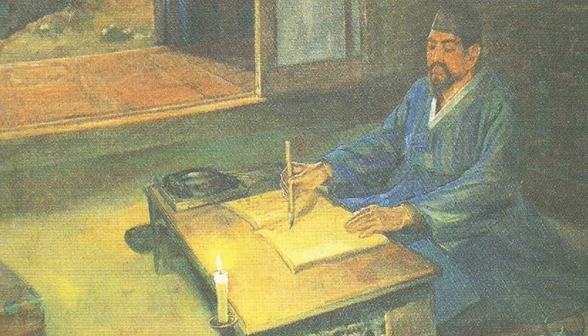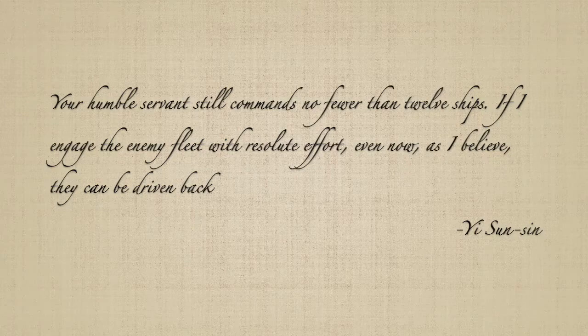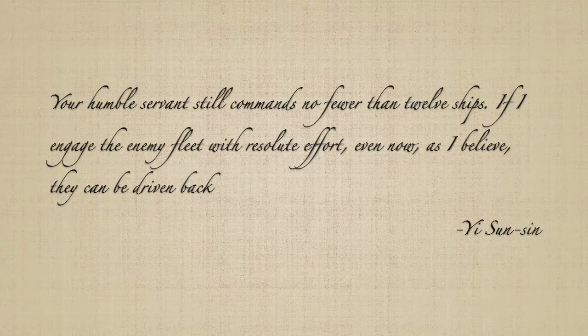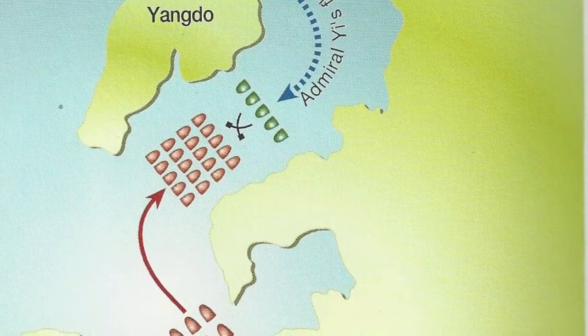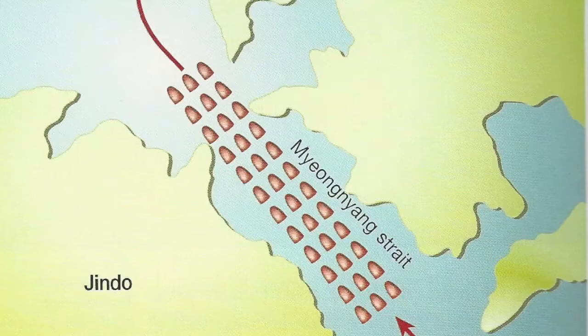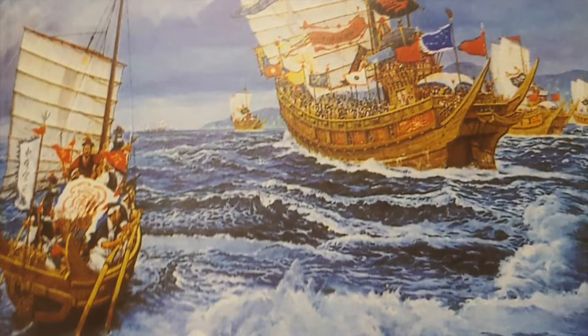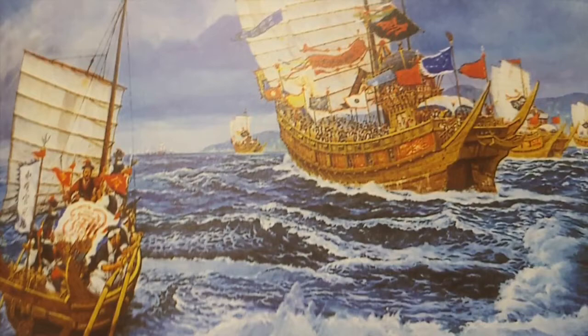The Korean navy once again called on Yi. He took up the challenge, writing to the Korean court: 'His humble servant still commands no fewer than 12 ships. If I engage the enemy fleet with resolute effort, even now, as I believe, they can be driven back.' He took a stand against the Japanese fleet at Myeongnyang Strait. The narrow waterway was easily maneuvered by Yi's small force, but the massive Japanese fleet was bottlenecked, so Yi's force could face it in manageable numbers. The strong, changing currents added to the chaos for the Japanese, so that they could not effectively maneuver their ships and were unable to escape the hailstorm of Korean arrows and cannonballs. Yi's 12 ships succeeded against more than 130 Japanese ships, sinking 31 of them.